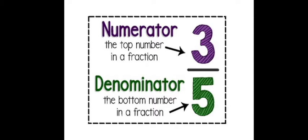Okay, what is denominator? The bottom number in a fraction is called denominator. So 5 is the denominator. So 3 by 5 is a fraction. It has a numerator and a denominator.